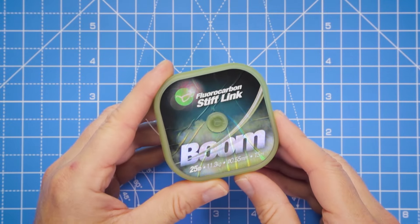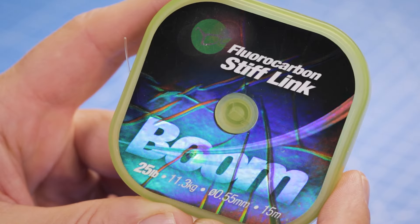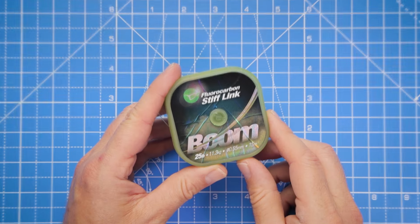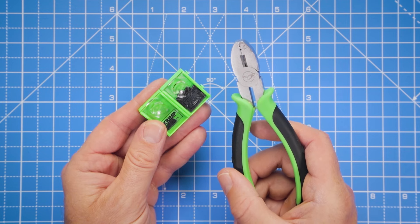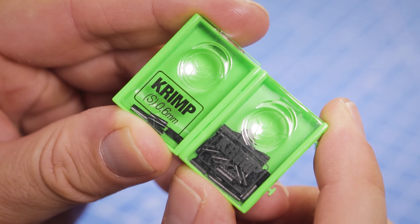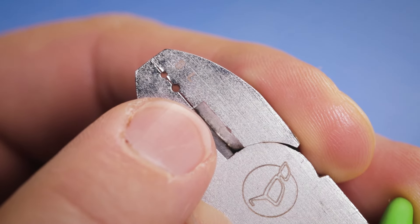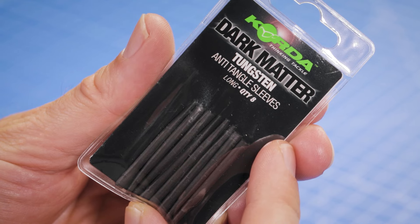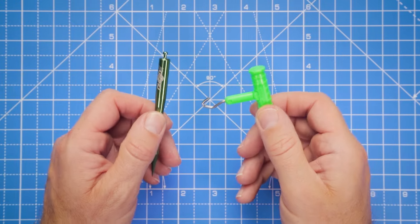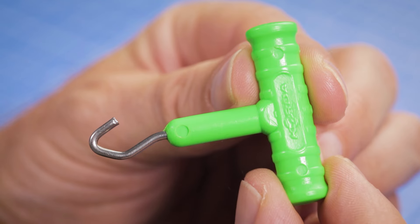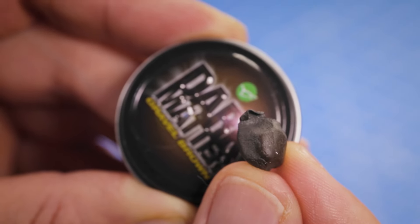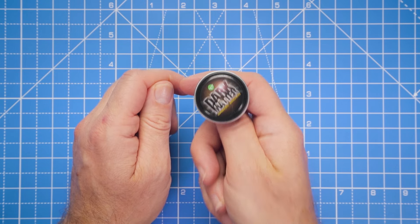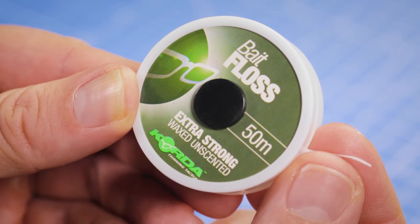To form the boom section of the rig, we're going to use boom material. It's a stiff nylon material that's going to push the rig away from the terminal tackle nicely. To join the 25 pound breaking strain boom material to the other components, we're going to use crimps and a crimping tool in the small crimp size. To help tidy the attachment and push it away, we're going to use an anti-tangle sleeve. I've got a couple pulley tools to help stretch out any memory in the boom section, some putty to help balance our buoyant hook bait, and some bait floss to attach our hook bait.